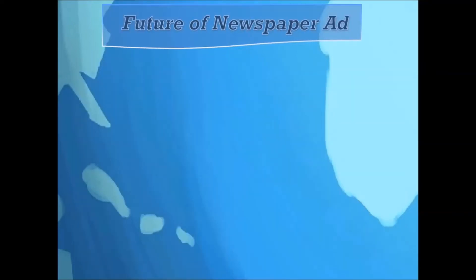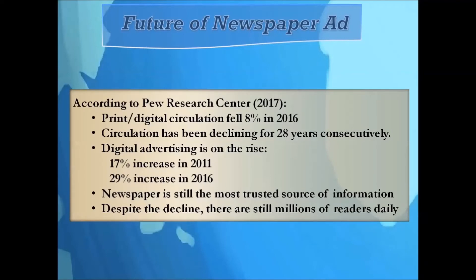So what is the outlook for print advertising? According to Pew Research Center, in 2017 newspaper circulation — both print and digital — fell 8% in 2016, marking the 28th consecutive year of declines. Newspaper advertising revenue in 2017 also decreased 10% from 2016. Digital advertising accounted for 31% of newspaper revenue in 2017, up from 17% in 2011 and 29% in 2016. But is the newspaper dying? Not quite — since the arrival of television in the 1950s newspapers were already declining, yet the industry still thrives and remains a trusted source with millions of readers daily.